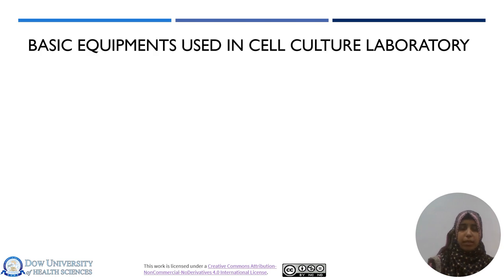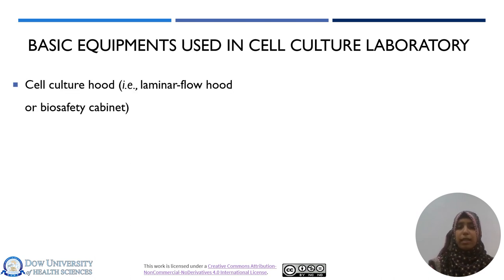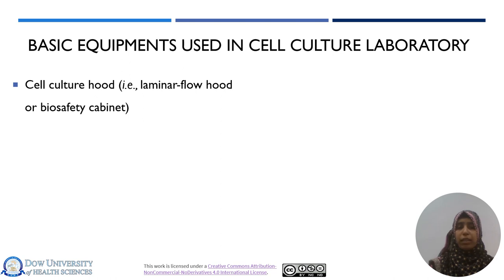Starting with the basic equipment used in a cell culture laboratory, the first and most important equipment, which is mandatory for any cell culture lab, is the cell culture hood — also called a biological safety cabinet or laminar flow hood. This is the most important equipment without which you will not be able to do sterile culturing.